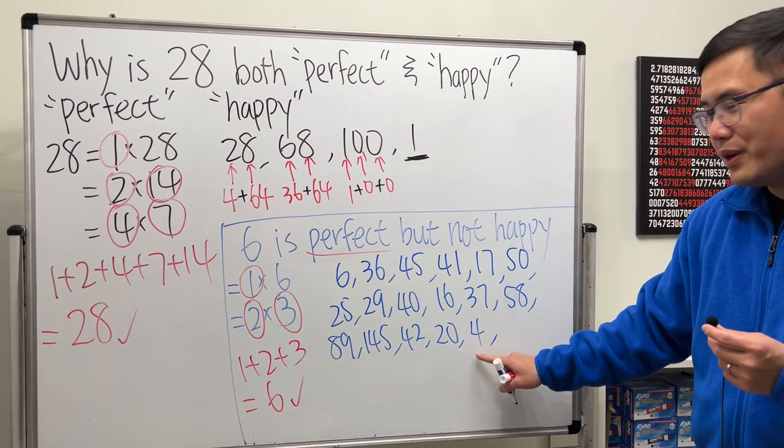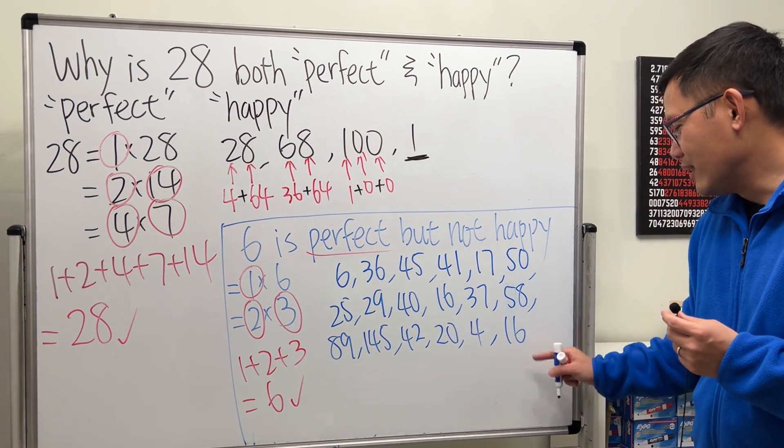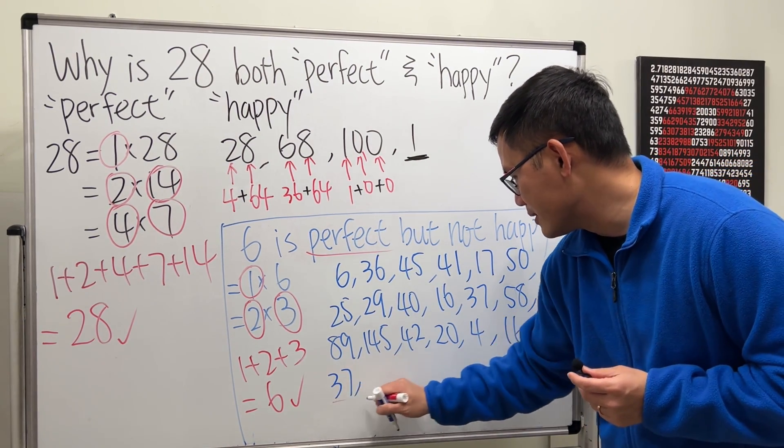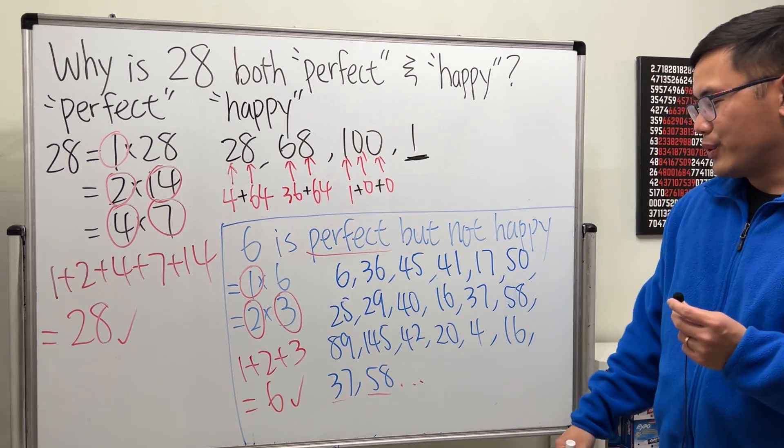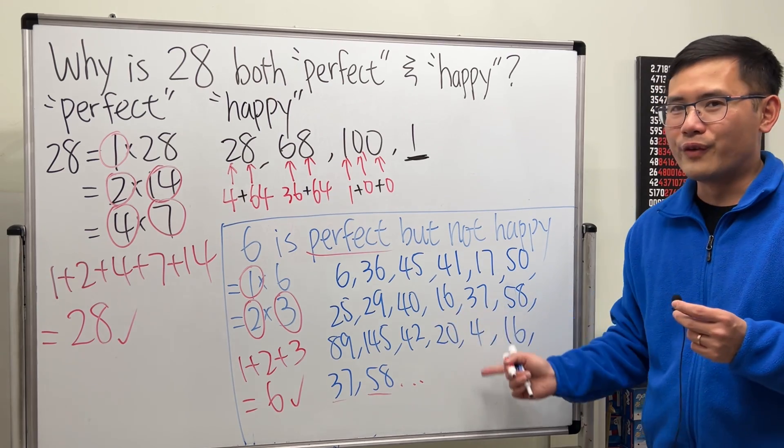And then 4 plus 0 is just that. And then square that is 16. And guess what? We see 16 earlier, right? So, if you continue, you end up with 37, 58. But these numbers are going to repeat. So, we don't have to continue anymore. We just run into this cycle over and over.